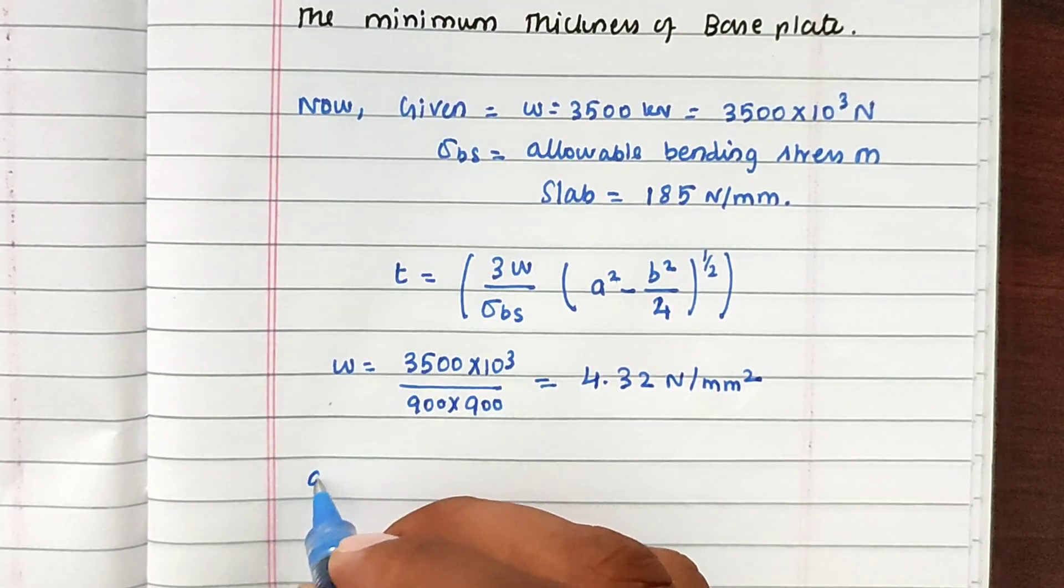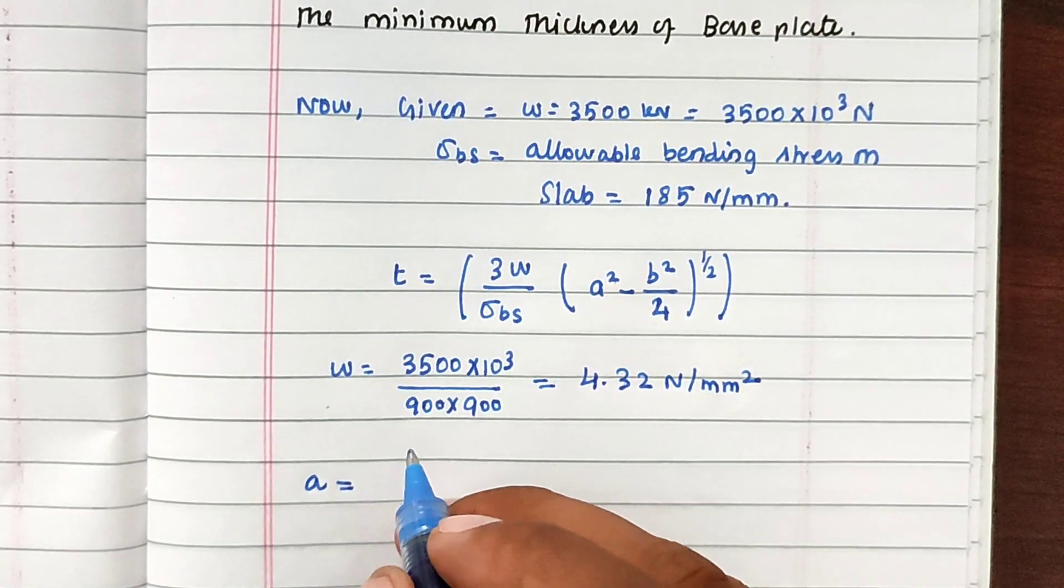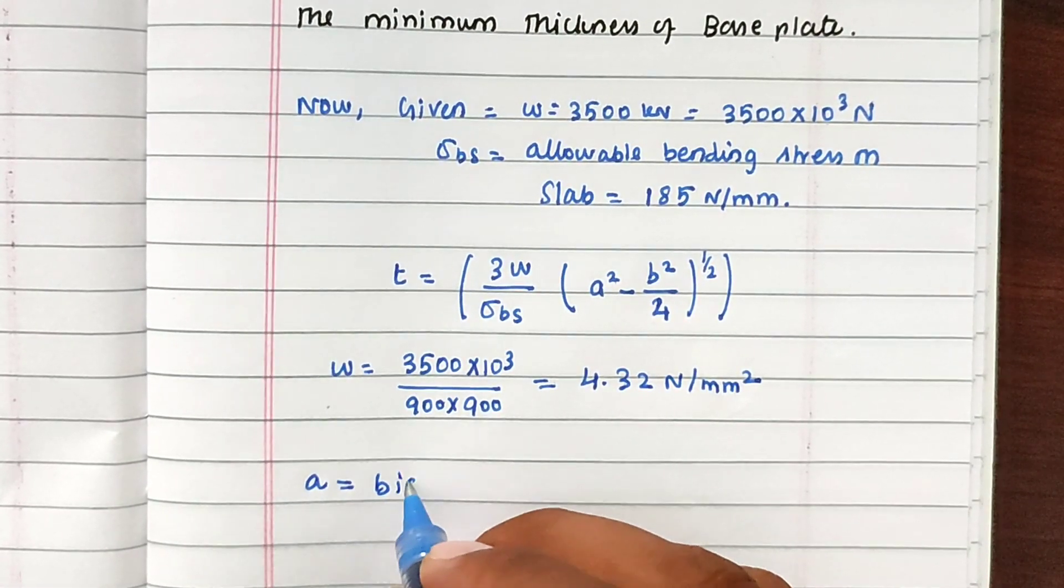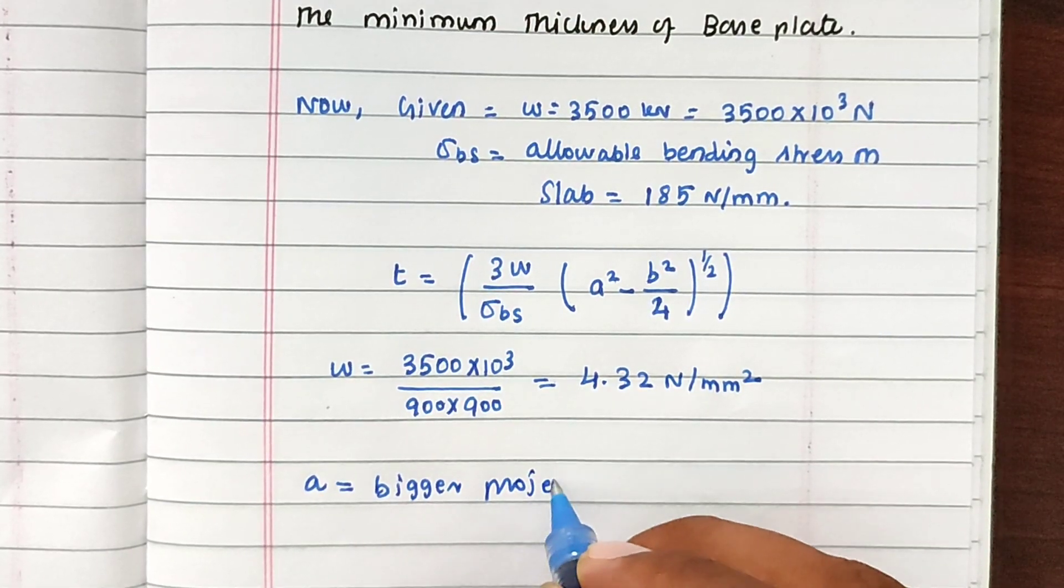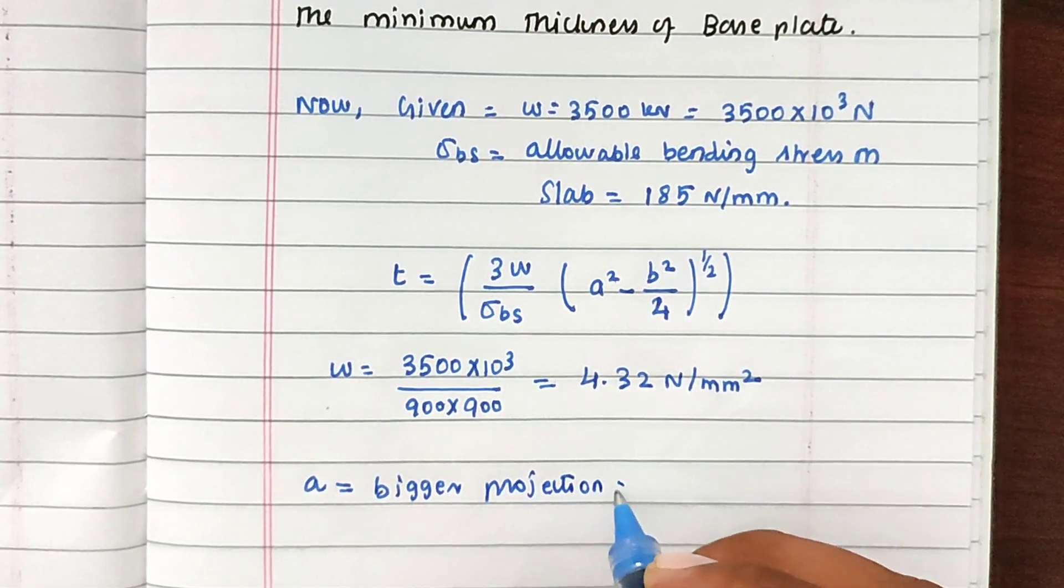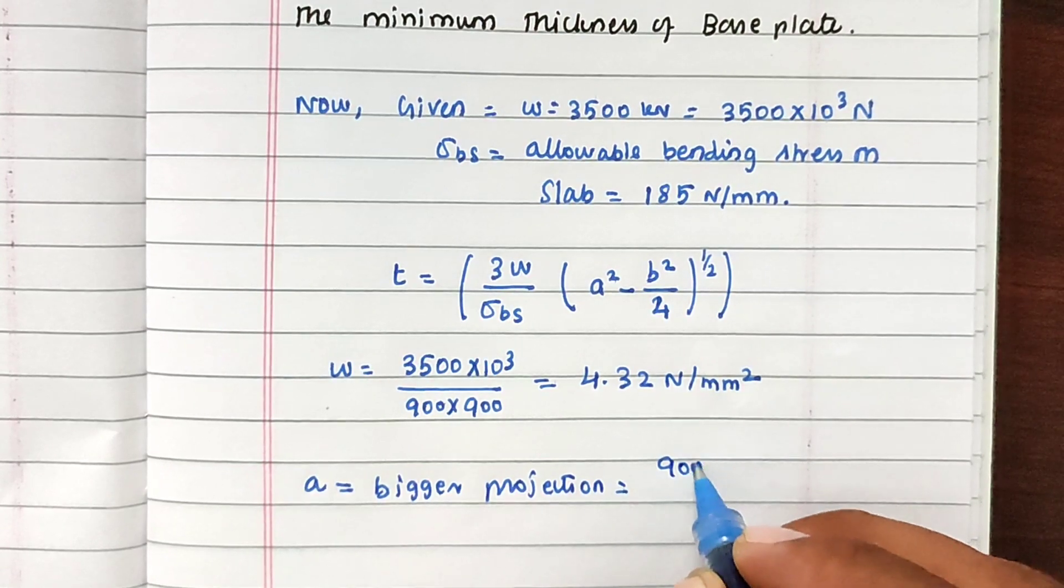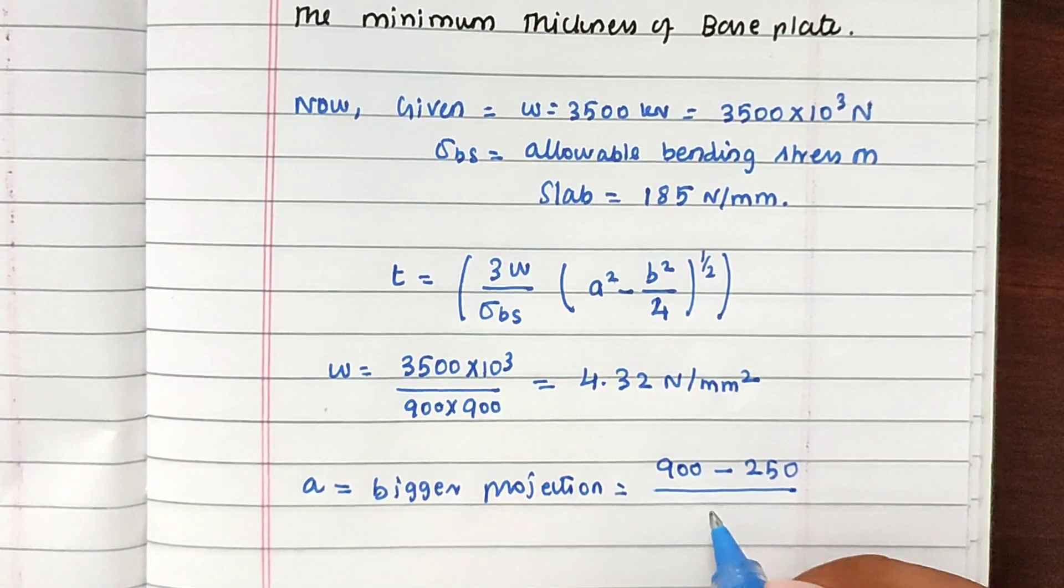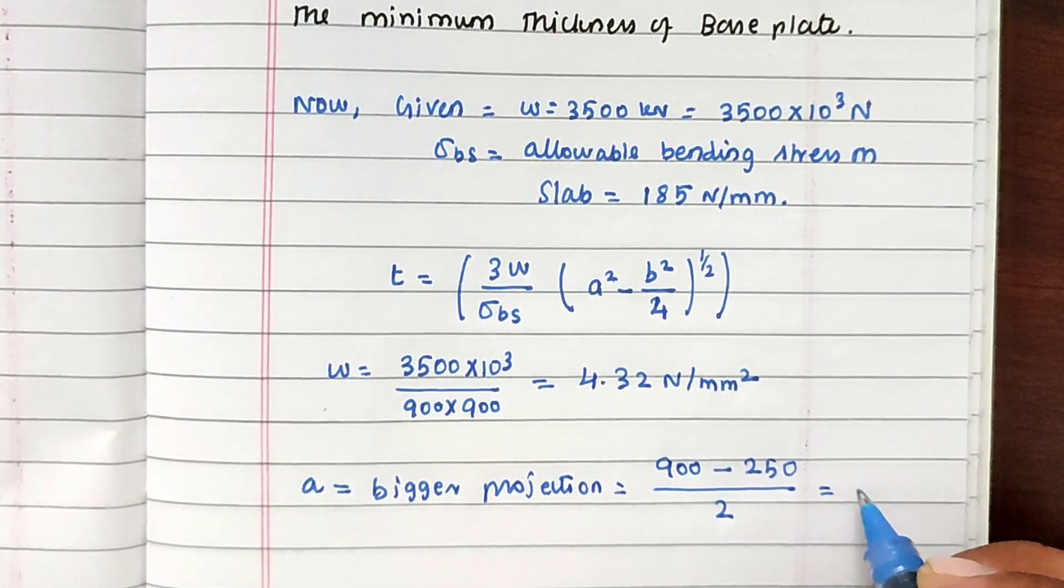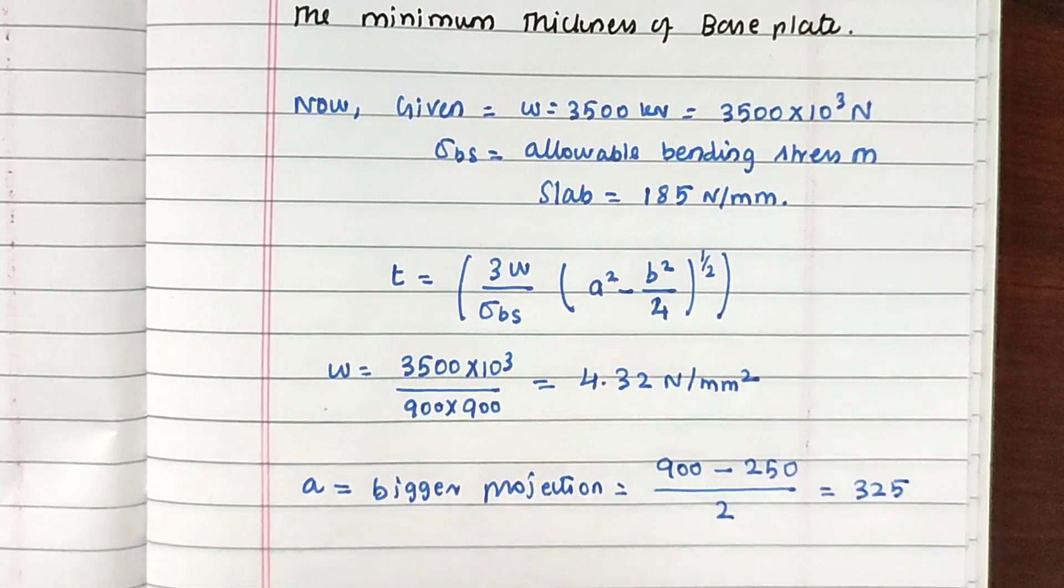Next thing is we have to find out the A value. So A is bigger projection. Bigger projection is 900 mm base plate minus 250 (the smaller dimension) divided by 2. So we got the value of 325.